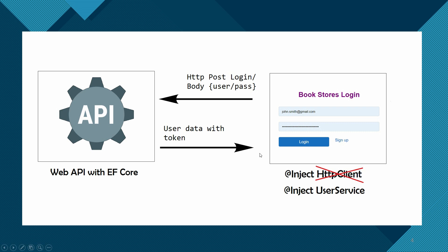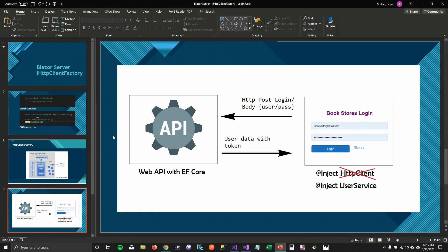In my last episode, I talked about how we injected HttpClient and made a login API call to our API. Now we're going to inject HttpClientFactory, and in the end we're going to inject a user service, which is going to use HttpClientFactory to make the API call. Let's look at the demo.